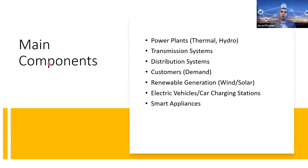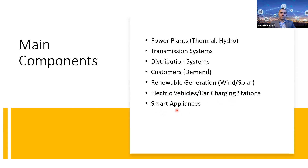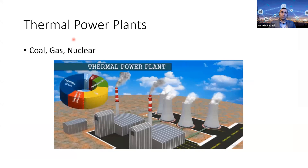The main components of the energy generation system are: power plants that generate power, a transmission system to send power over distance, a distribution system to distribute power between customers at different locations, and then customers — us — who consume electricity. Modern systems also integrate renewable energy generation, electric vehicles, car charging stations, and smart appliances.